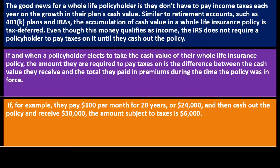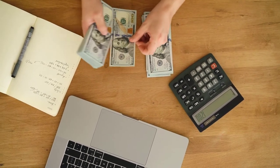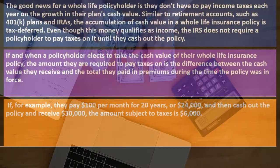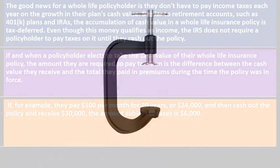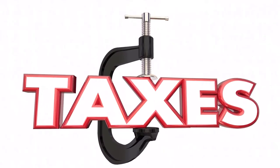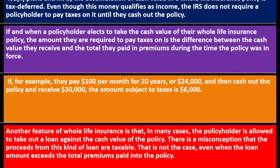If and when a policyholder elects to take the cash value of their whole life insurance policy, the amount subject to taxes is the difference between the cash value received and the total paid in premiums during the time the policy was in force. For example, if they pay $100 per month for 20 years — $24,000 total — and then cash out the policy and receive $30,000, the amount subject to tax would be the $6,000 difference, which is assumed to be the growth that was not taxed annually within the policy, as it would have been outside the policy in a non-sheltered account — where a 1099-INT would have been received.